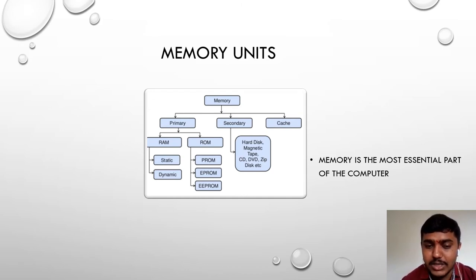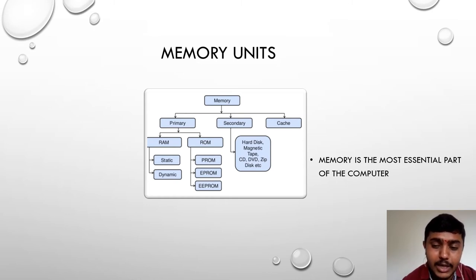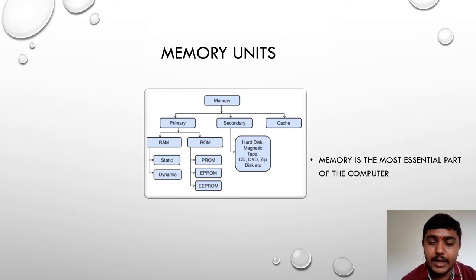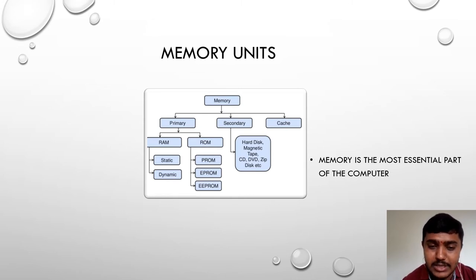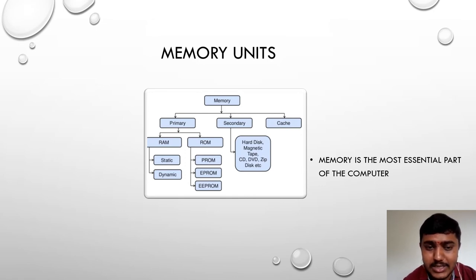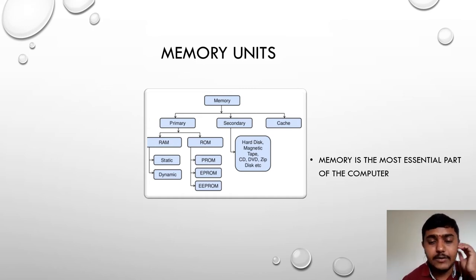Primary memory is the main memory, and we call it volatile memory. Why volatile? Because the data stored in the computer is present only until the power is on. Once you switch off the system, the data will be erased. Such memory is known as primary memory. There are two types of primary memory: RAM and ROM.